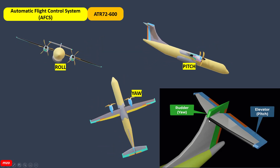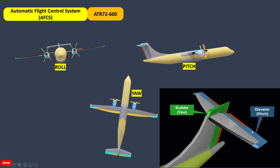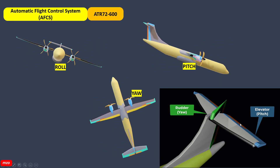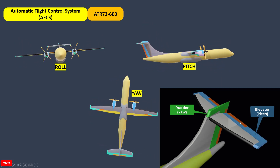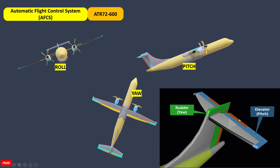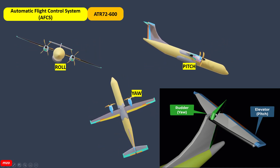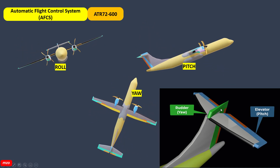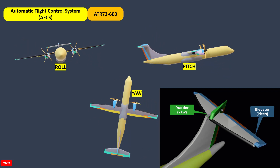This is the pitch control by the elevator, and the elevator trim is automatically controlled by our AutoPilot system, AFCS. This is the rudder, and the rudder trim is automatically controlled by the AutoPilot flight control system.